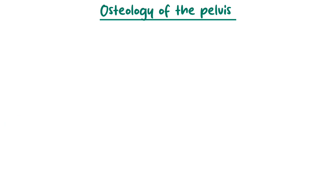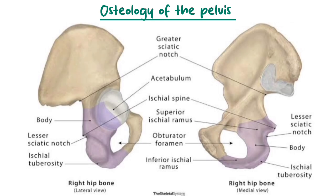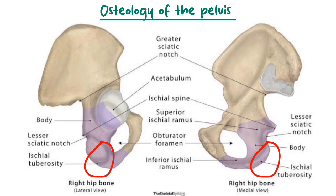Now let's talk about the landmarks found on the ischium. The ischium forms the lower posterior part of the pelvis. Key landmarks include: number one, the ischial spine, a sharp bony projection located between the greater and lesser sciatic notches. Number two, the ischial tuberosity, a rough bony area that serves as a point of attachment for the hamstring muscles — the biceps femoris, semitendinosus, and semimembranosus. It is also known as the sit bone because it supports body weight when sitting. The third landmark is the ischial ramus, a branch of bone that extends toward the pubis and forms part of the ischiopubic ramus.